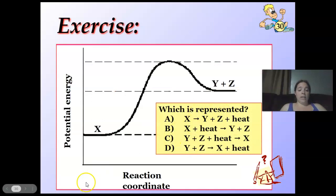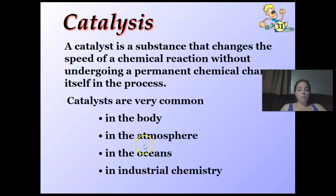Which is represented here? Got X down here, Y and Z up here. Do we have Y and Z first? No. So C and D are out. Do we have X equals Y plus Z in heat? E, not really. Heat is down here because it's absorbed to get up to here. So X plus heat gives you Y and Z.